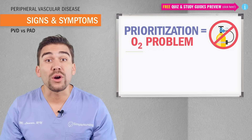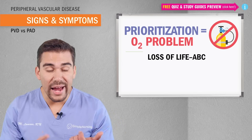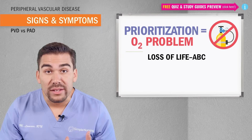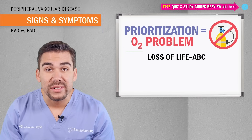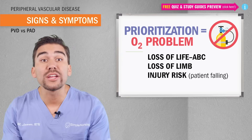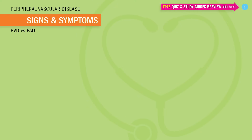That's why the ABCs are always there to prevent the loss of life — Airway, Breathing, Circulation — they should always be assessed first. Then loss of limb, then it goes into risk factors and other stuff.